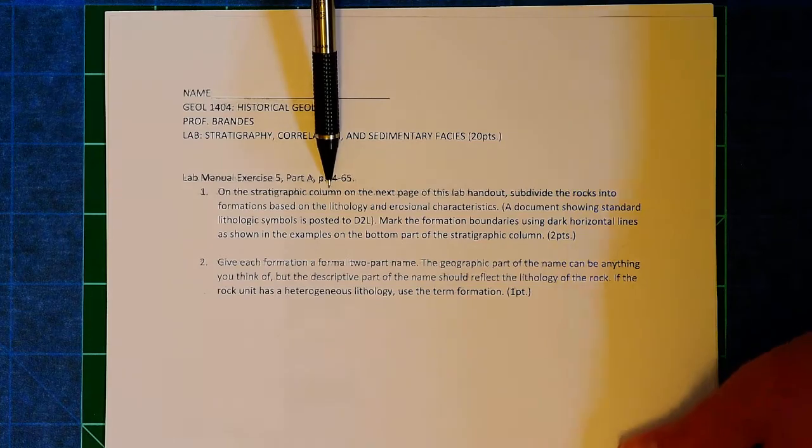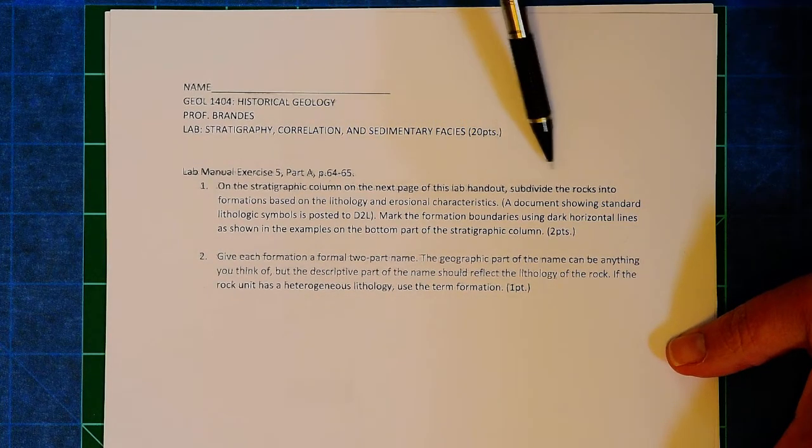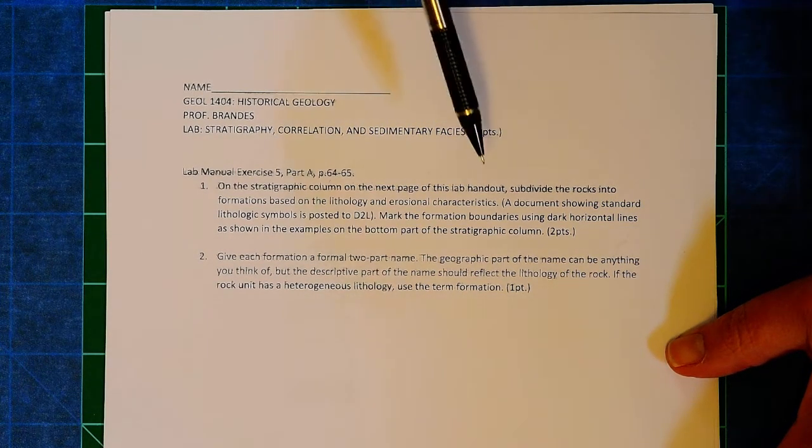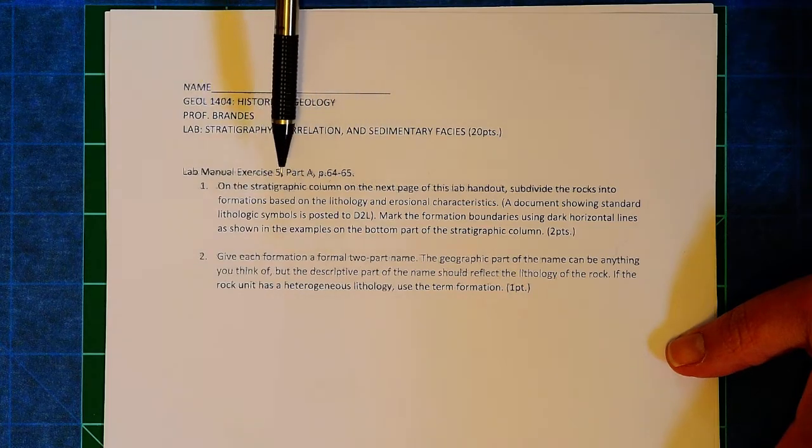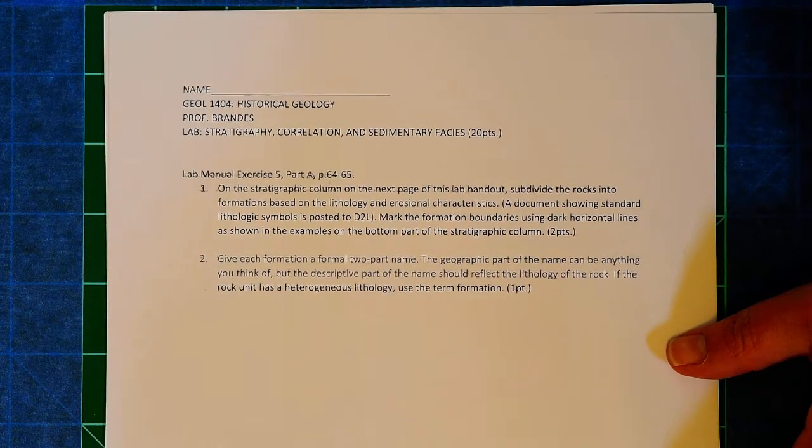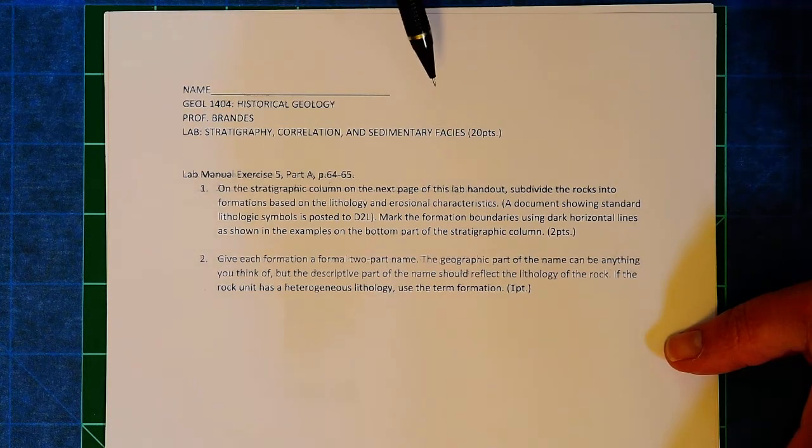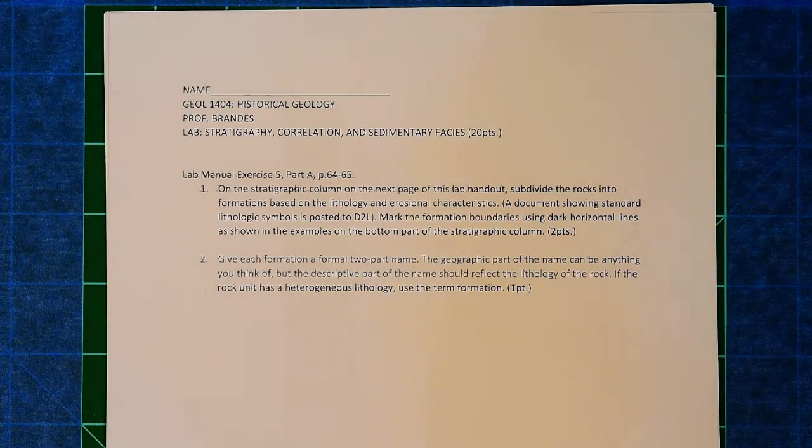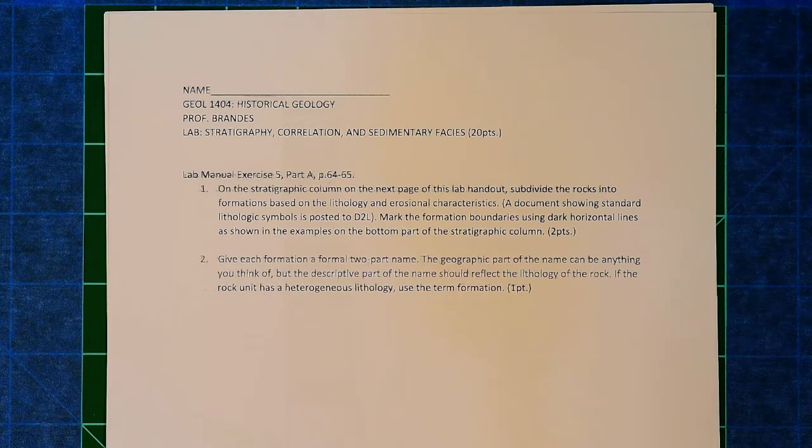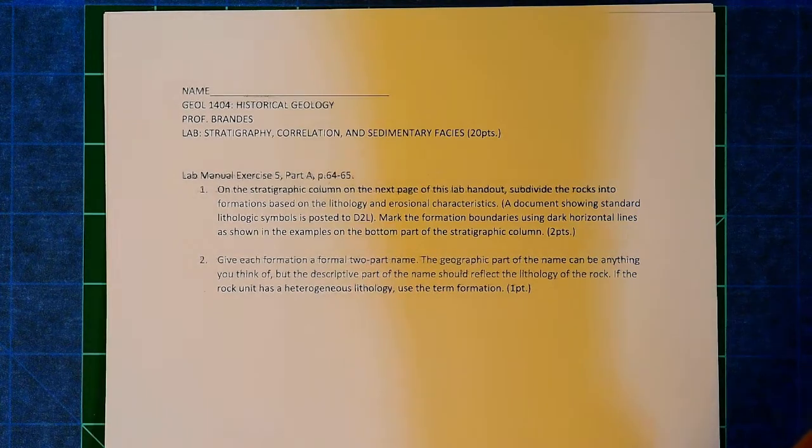On the stratigraphic column on the next page in the handout, you need to subdivide rocks into formations based on both their lithology, the rock type, and then if you see any noticeable erosional features. I have attached a document to D2L that lets you know what the standard geological symbols for different rock types are.